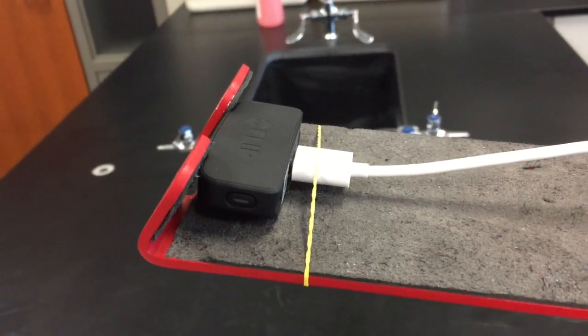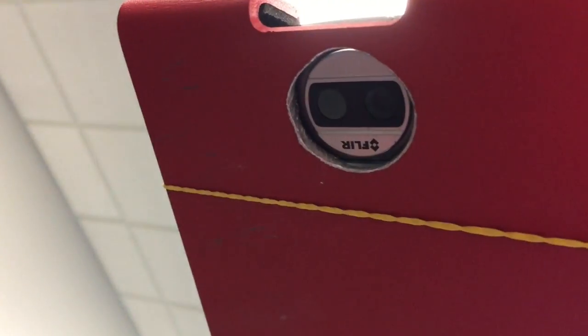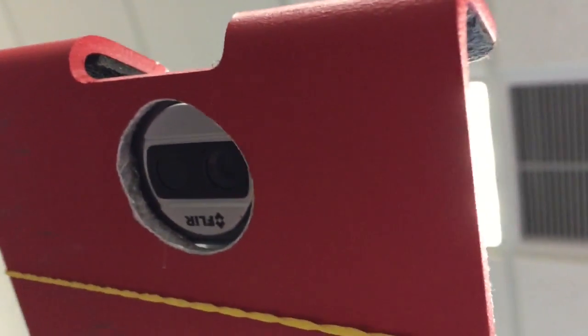All right, so there's the FLIR ONE camera. And you can see that underneath the camera and the thermal image video part is exposed in the cutout there.